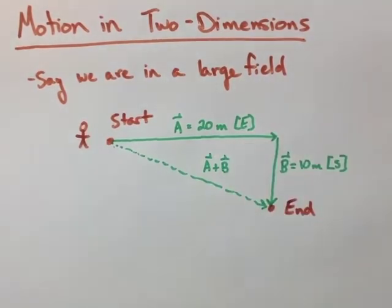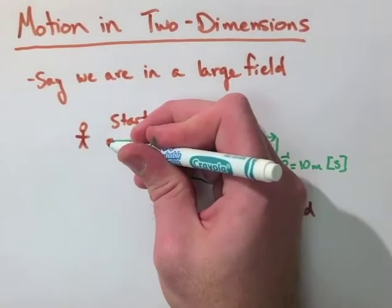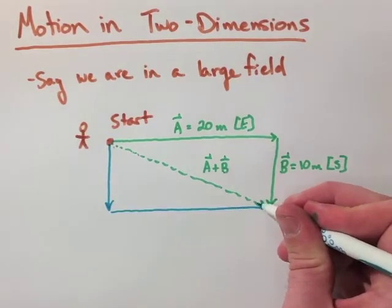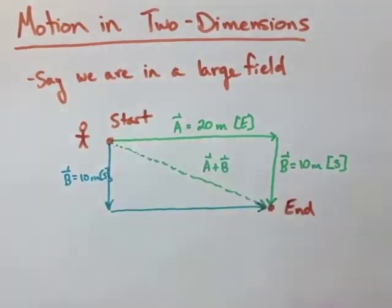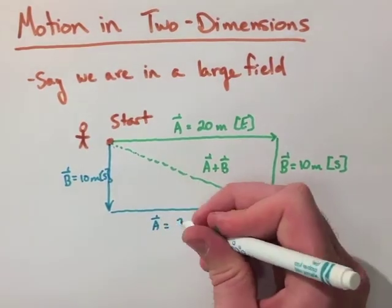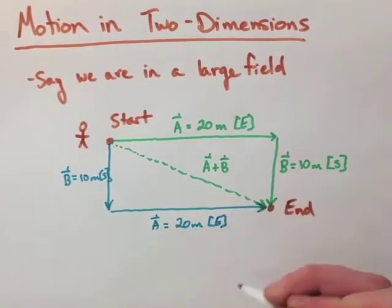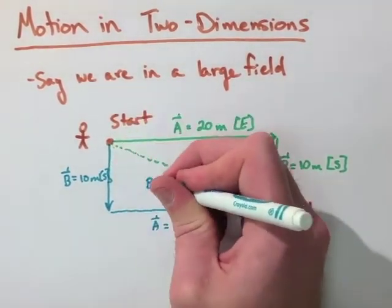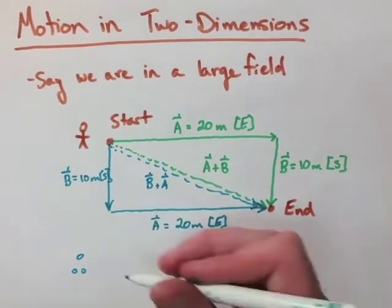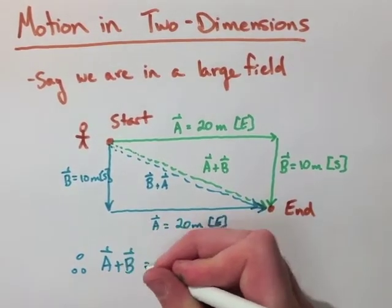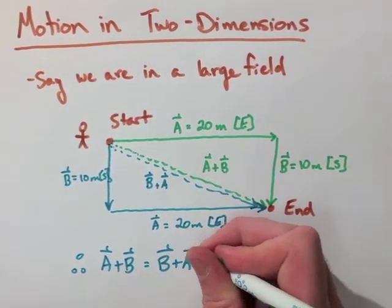That's going to be A plus B from what we labeled on the page. Now, if we look at going 10 meters south and then 20 meters east, well, that's going to give us the same result. We're going to go straight across when we measure, and that's actually B plus A. So what we can deduce from this is that A plus B is the same or equal to B plus A.